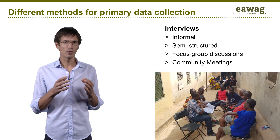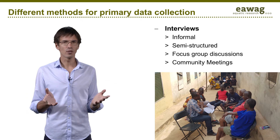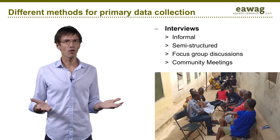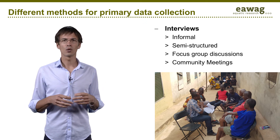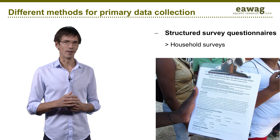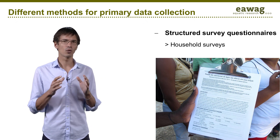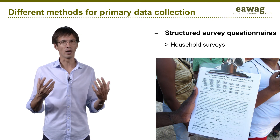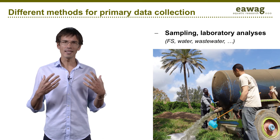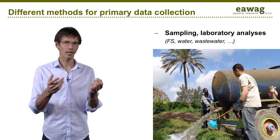The key sanitation stakeholders are precious partners for data collection and analysis. If you want qualitative data, there are different types of interviews that can be carried out, depending on the type of information you want and the stakeholders you have in front of you. Interviews can be informal, semi-structured, or led with a group in so-called focus group discussions. If you want quantitative data — that is, data with which you can make statistics — you can proceed with structured survey questionnaires, for example to collect information on individual needs, preferences and priorities. The most common examples are household surveys. Finally, in order to understand the quantities and characteristics of what you will have to treat, be it wastewater or fecal sludge, you may have to take samples and conduct laboratory analysis.